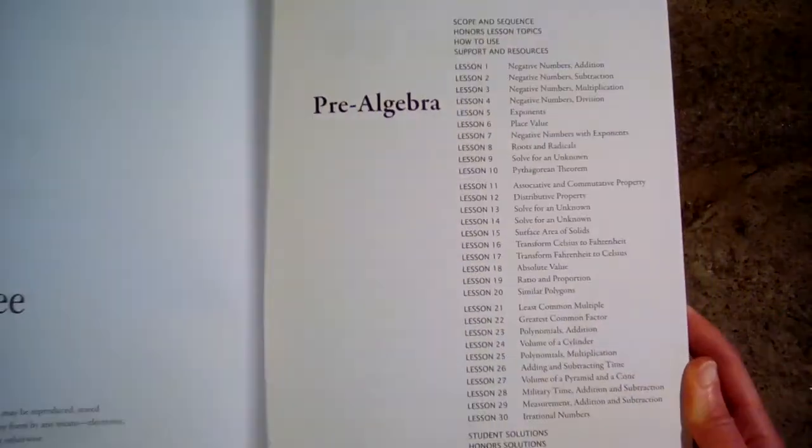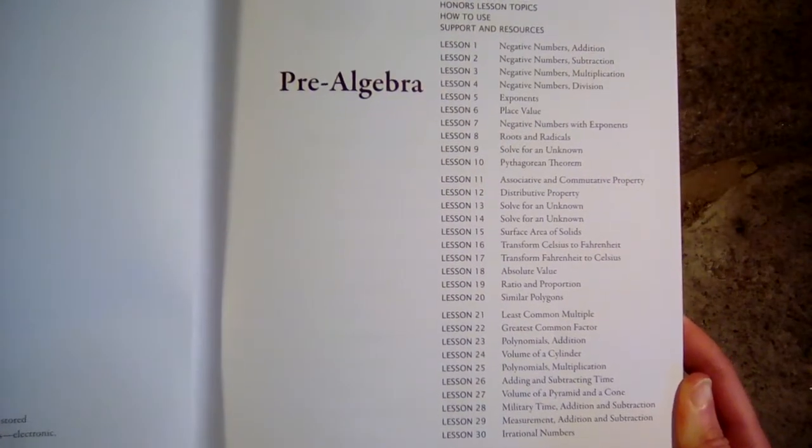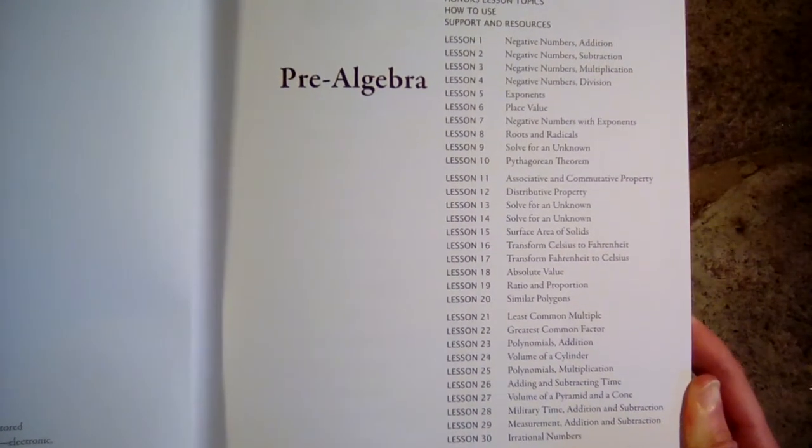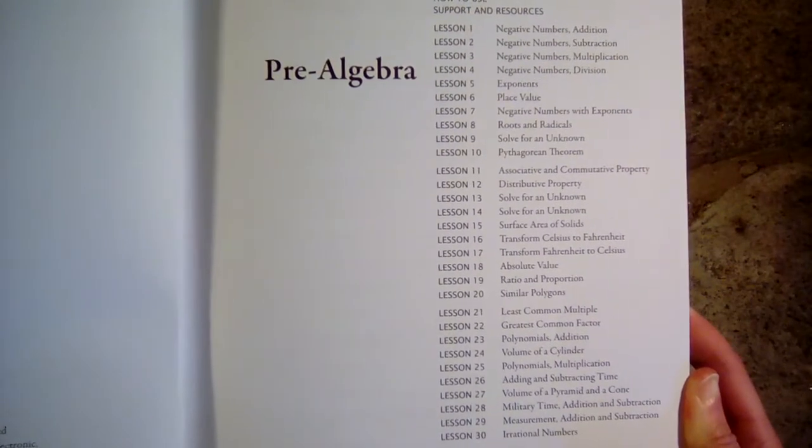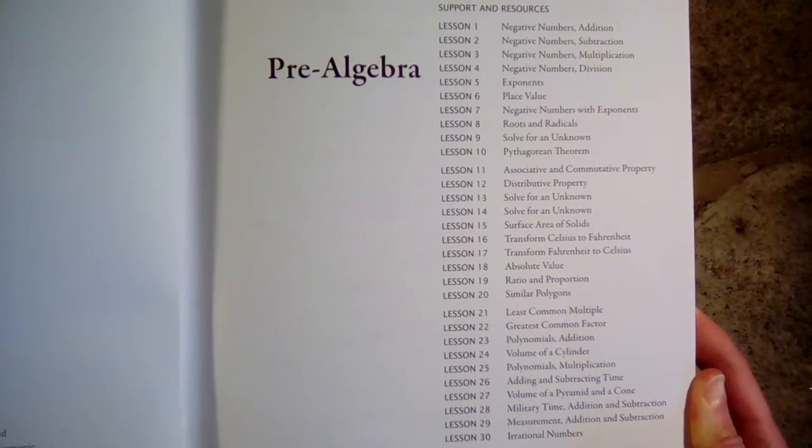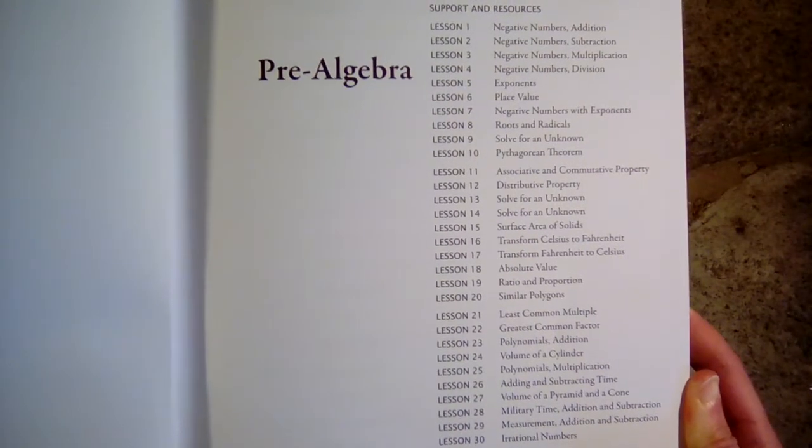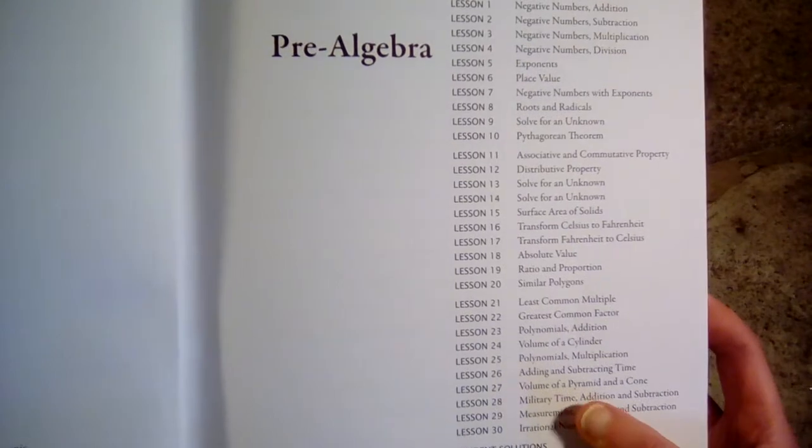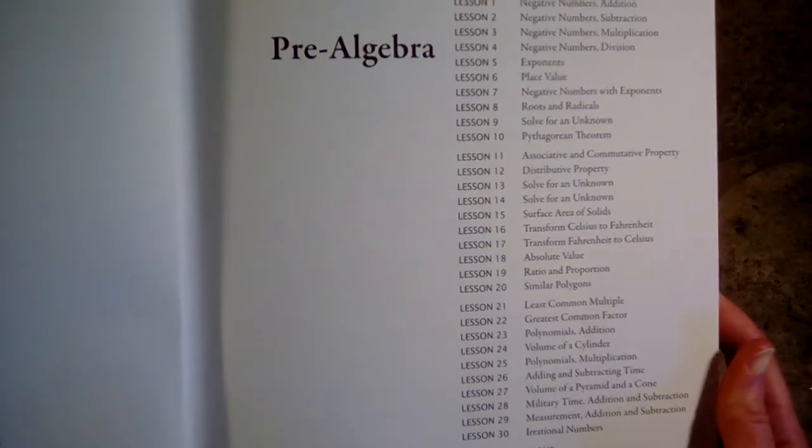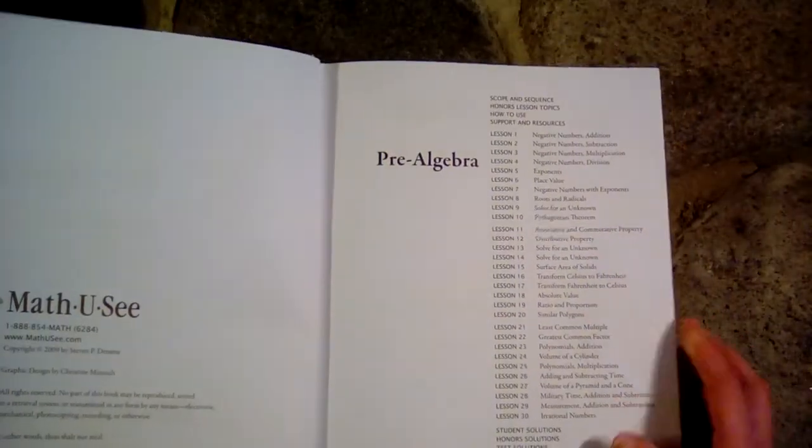So if you'd like to know what is covered in this book, there are 30 lessons and these are the 30 topics that are covered. If you'd like to pause and take a look at that: negative numbers, distributive property, Pythagorean theorem, it looks like we have some military time down here, and transforming Celsius to Fahrenheit, solve for an unknown. So those are the kinds of things in here.